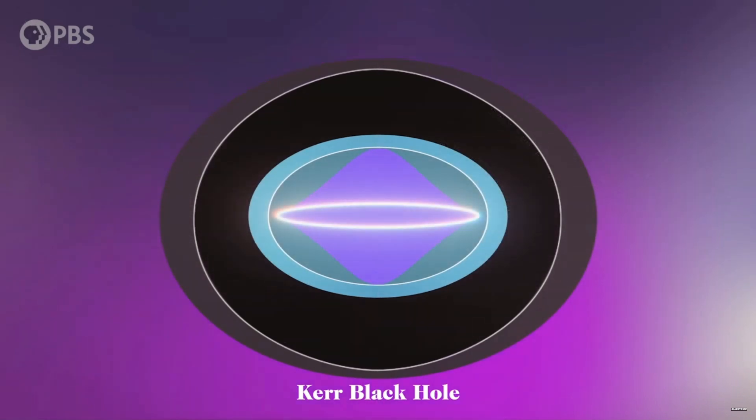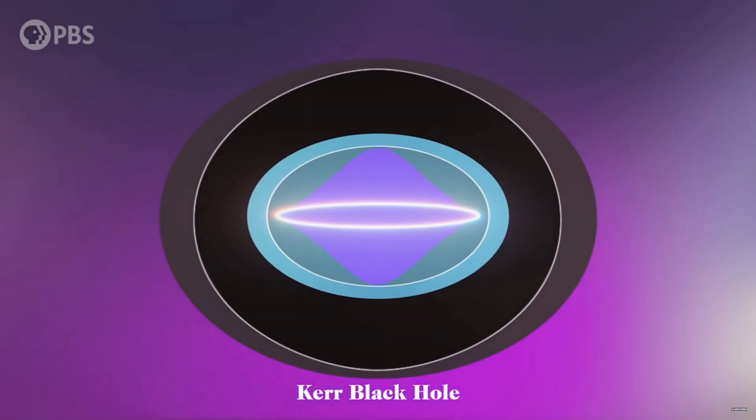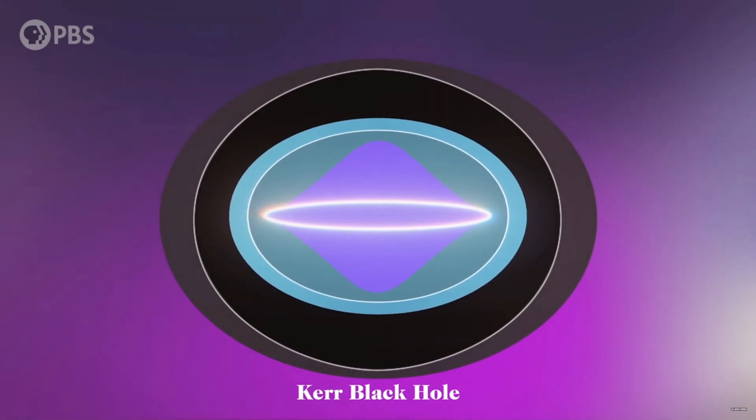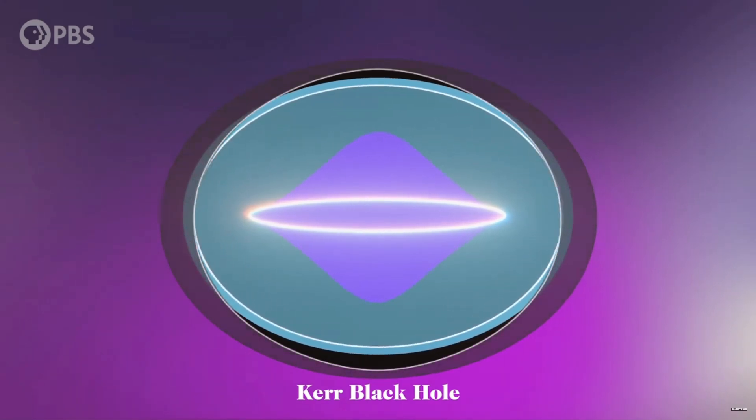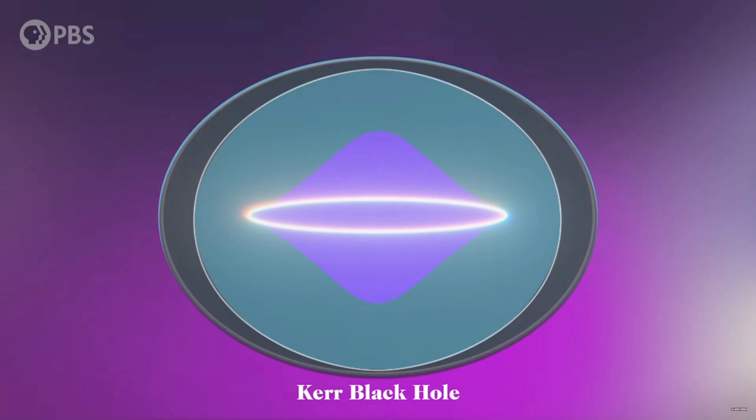If a black hole were to achieve or surpass a spin of 1, the ring singularity would expand so much that it could peek out past the event horizon, making it visible to the outside world and violating the cosmic censorship conjecture.